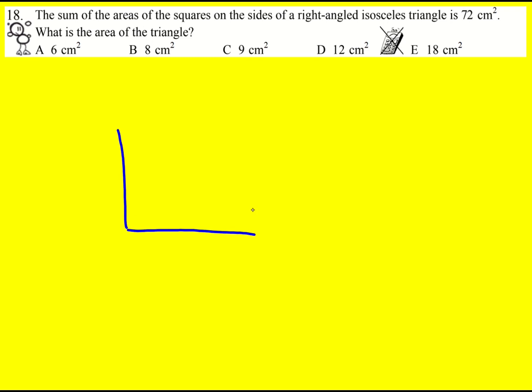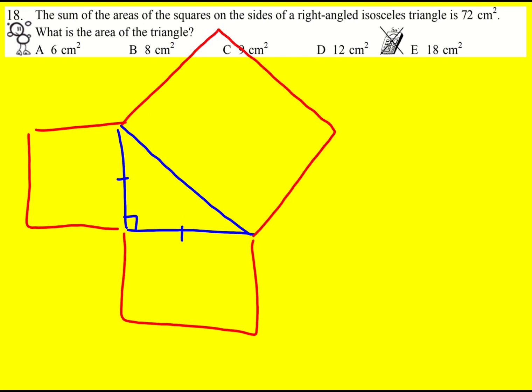I'm going to draw my right-angled isosceles triangle here. That is equal to that. And then the sum of the areas of the squares equal 72 in total.